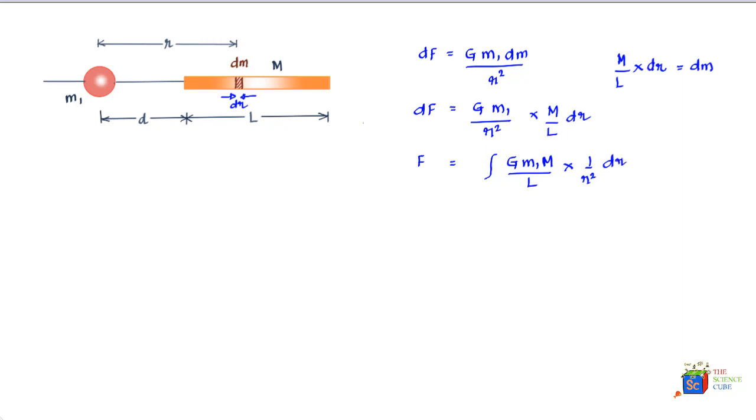And the value of r should change from d to d+L. So you can see that G*m1*M/L is a constant and we can take it out. This would therefore look something like G*m1*M/L times the integral from d to d+L of 1/r² dr.